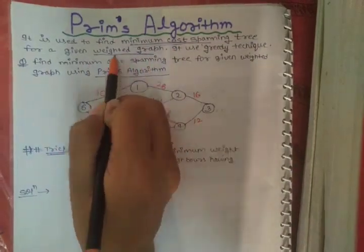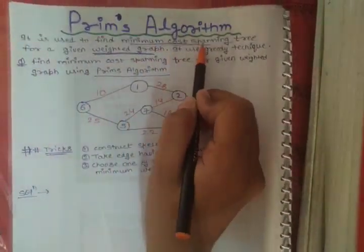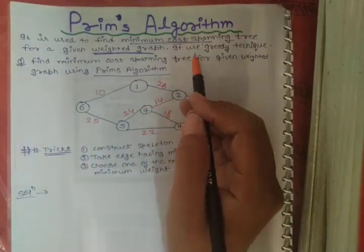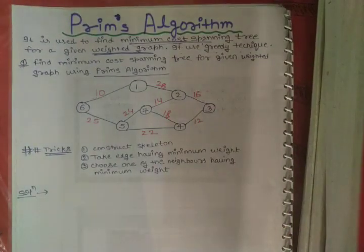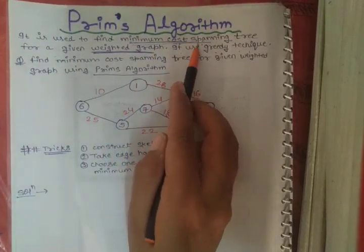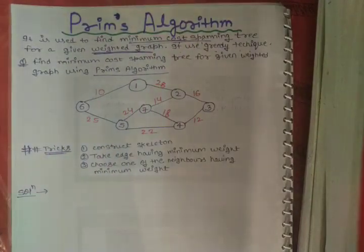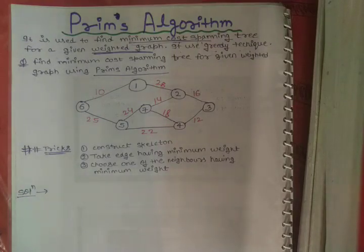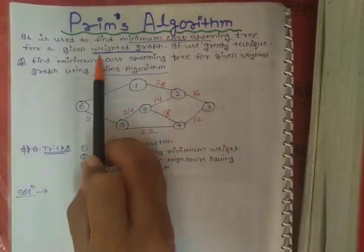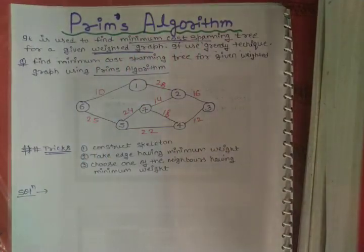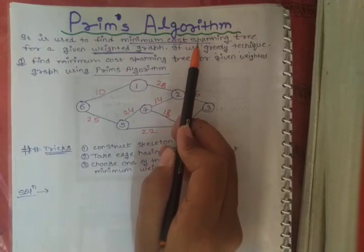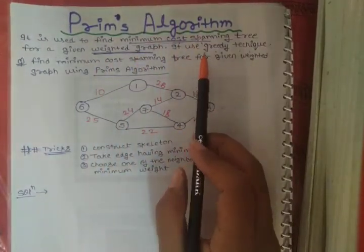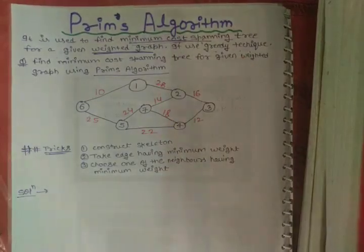We must have a weighted graph, and for that weighted graph we will find a spanning tree which contains minimum cost. This algorithm uses a greedy technique. One important thing to remember is that minimum cost spanning tree can be found using Prim's algorithm as well as Kruskal's algorithm. In this video I will explain Prim's algorithm, and in the next video I will explain Kruskal's algorithm - both use greedy technique.